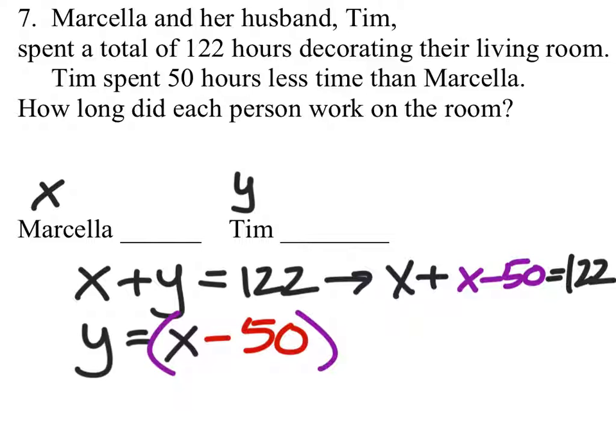So, again, this is just where the y value was, but now I have an expression there. So, when I add the x's, I have one x there and one x there. So, when I combine them, I have two x's. Minus the 50 equals 122.